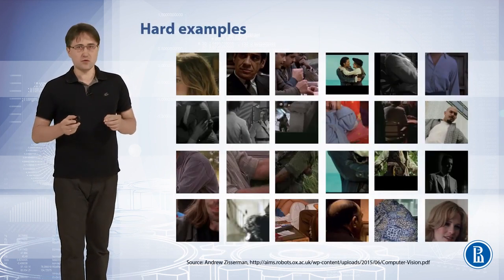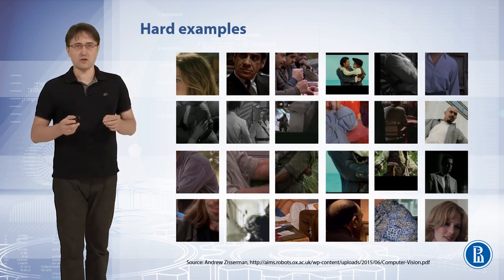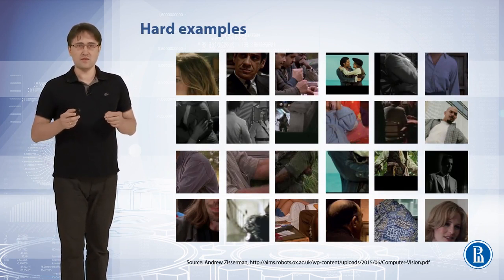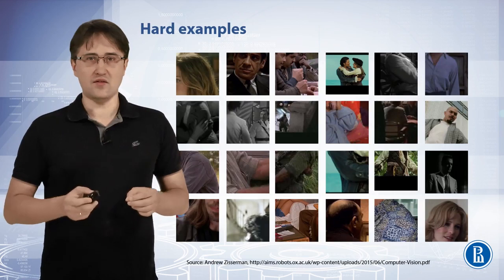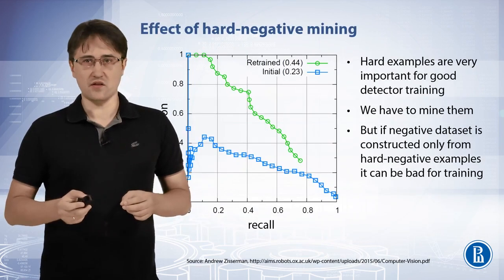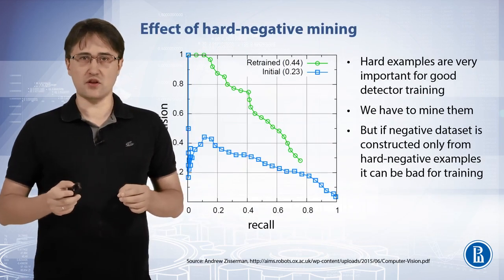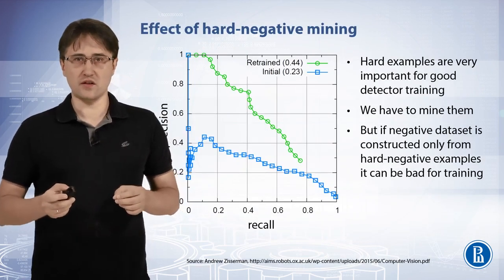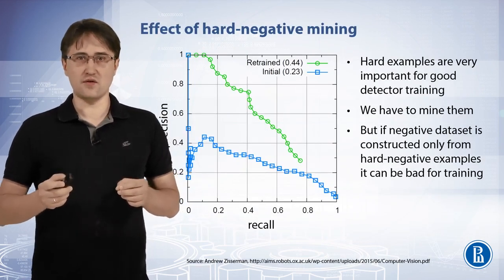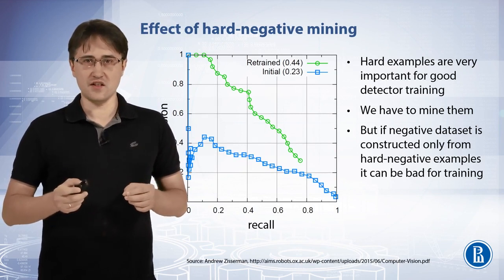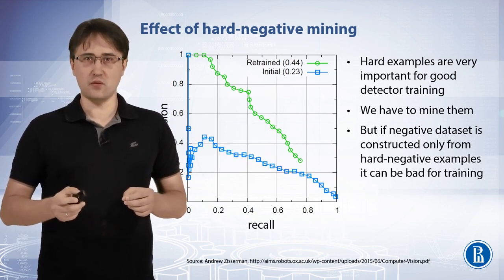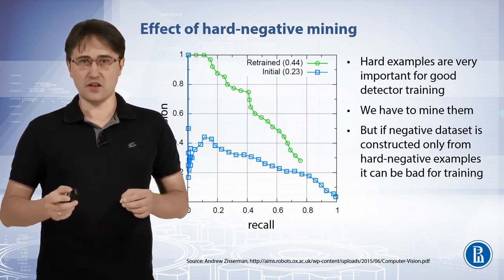Here you can see examples of false detections. Most of them are close to true detections but with very bad localization. After several iterations, we plot the precision-recall curve of the final detector against the first detector. We can clearly see that the detector performance has improved dramatically.